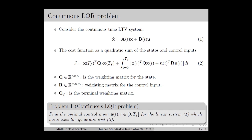Let's recall the continuous LQR problem from the last lecture, in which we consider a continuous time linear time varying system defined by equation 1. The cost function is chosen as a quadratic sum of the states and control input as in equation 2, in which Q, R, and Qf are the weighting matrices for the states and control inputs. The task is to find the optimal control input for the linear system which minimizes the quadratic cost. In this derivation, we will be using a linear time invariant system to simplify the notation, so A(t) and B(t) will be A and B respectively. The same derivation can be applied for linear time varying systems by replacing A and B with A(t) and B(t).